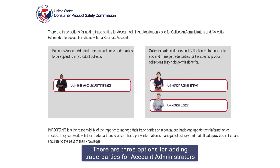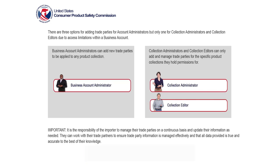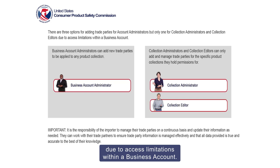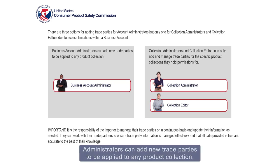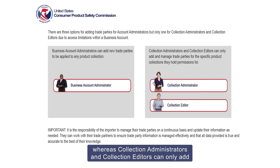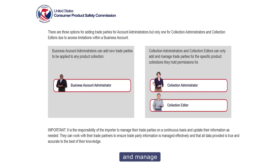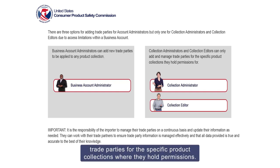There are three options for adding trade parties for account administrators, but only one for collection administrators and collection editors due to access limitations within a business account. Business account administrators can add new trade parties to be applied to any product collection, whereas collection administrators and collection editors can only add and manage trade parties for the specific product collections where they hold permissions.